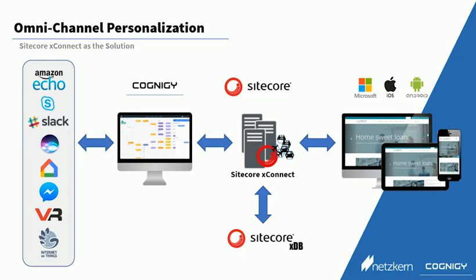During the conversation we can then push back information into Sitecore XDB through XConnect, like for example interests that the person might have. This information can then in turn be used on a website where we use the information from XDB to personalize the web experience. And again, the surfing behavior that the user exhibits on the website can be pushed back into XDB, which in turn will again personalize the interactions the user has on conversational AI channels.